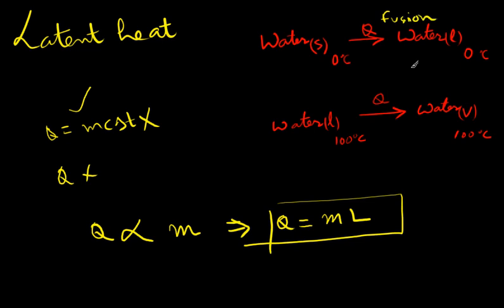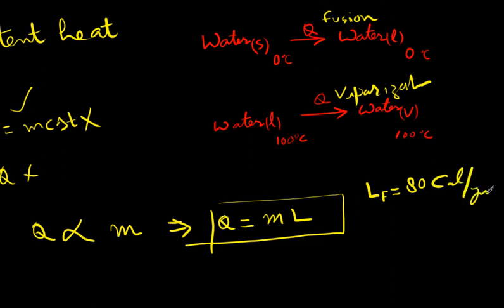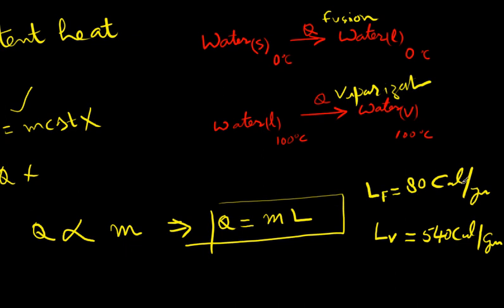For water, the latent heat of fusion L_F equals 80 calories per gram — you need to remember this. The latent heat of vaporization L_V equals 540 calories per gram. If you express these in joules per kg, the numbers will change slightly.